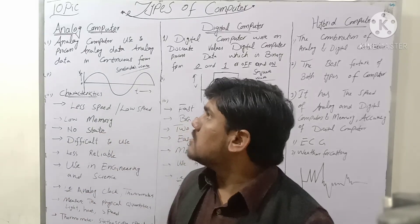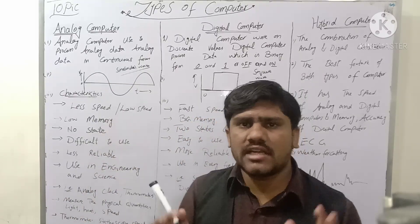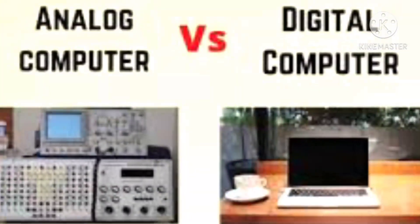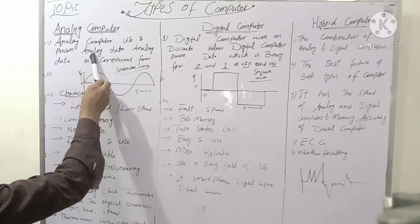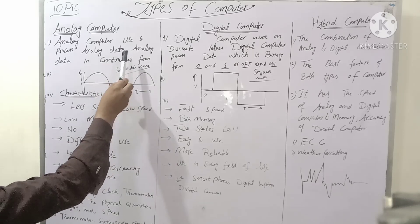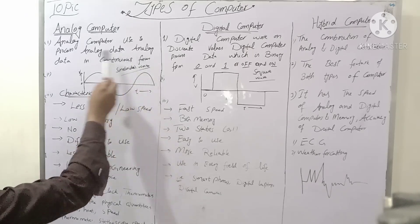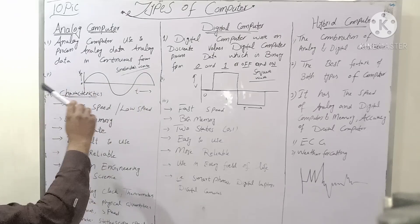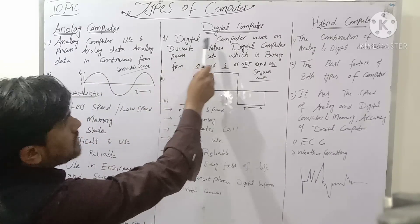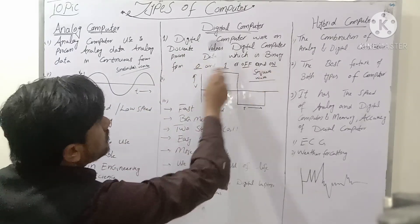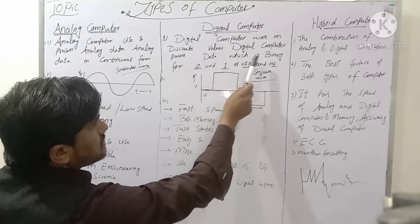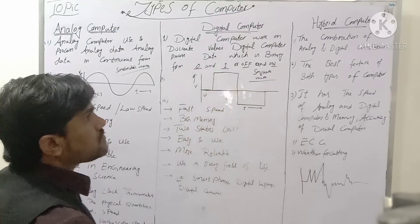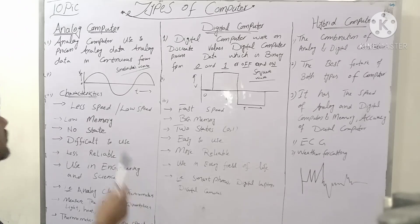Let me now discuss the differences between analog and digital computers. First, analog computers are used to process analog data, which is in continuous form. Digital computers, on the other hand, work on discrete values — they process data in binary form, zero and one, meaning off and on.